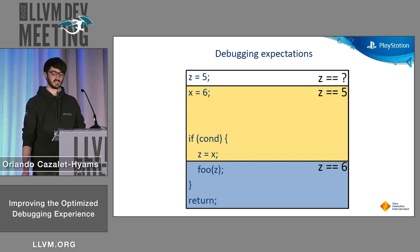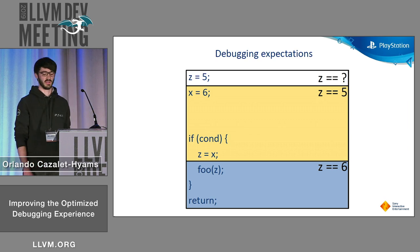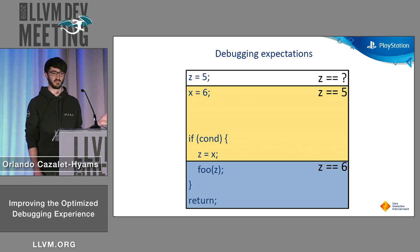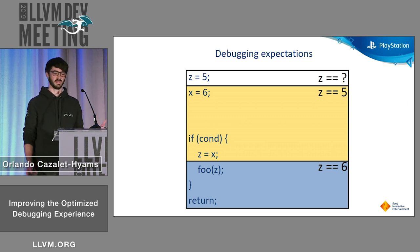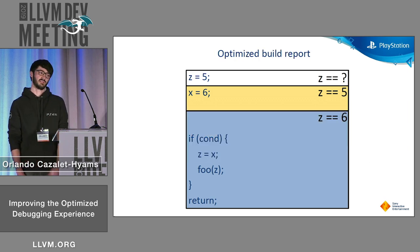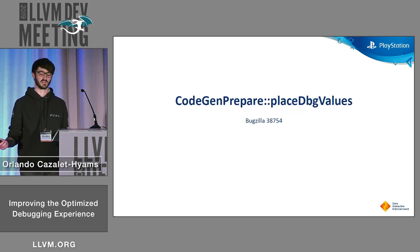In this test case, we know that cond is always true, so we're interested in the variable Z. We expect it to have the value 5 in the yellow range and then 6 in the blue range. But when we run it through Dexter as an optimized build of this program, Dexter tells us that actually the value 6 is seen in this larger range.